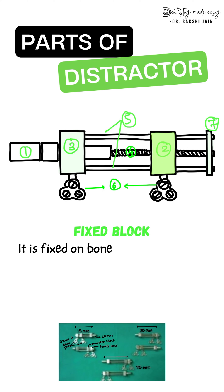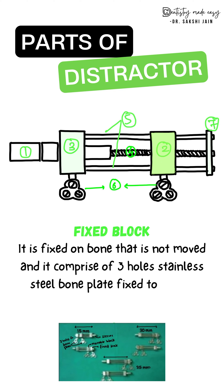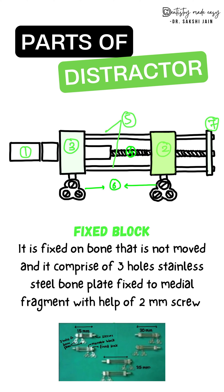The next part is the fixed block. As the name says, it is fixed on the bone and is not moved. It comprises a three-hole stainless steel plate which is fixed to the medial fragment with the help of a two-millimeter screw.